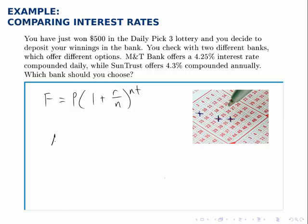For M&T Bank, R is 0.0425 and N, if it's compounded daily, is 365. 365 times per year, the interest is compounded.